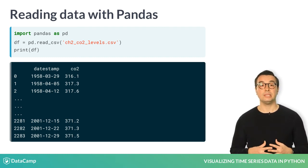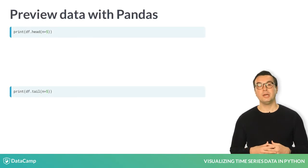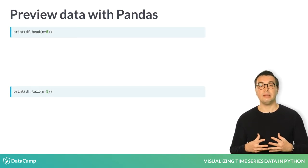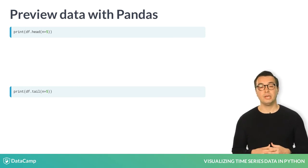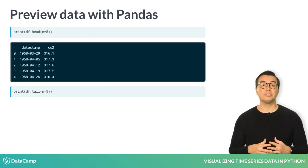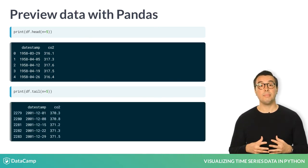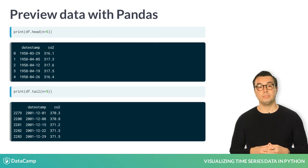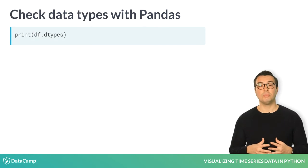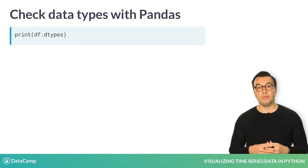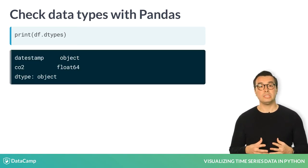Now that your file has been loaded into the dataframe named DF, you can leverage additional Pandas methods to display information about DF. The .head method allows you to display the first N rows of your dataframe. Similarly, the .tail method returns the last N rows of your dataframe. When analyzing data, it is also recommended to check the type of each column in your dataframe, which will help you understand the type of data you are working with. For that, you can use the .dtypes method to print out the data type of each column.